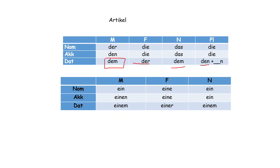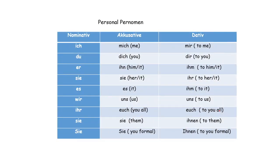'Den plus n' means we add 'n' to the noun that we use after 'den'. And 'ein' becomes 'einem' in masculine, 'einer' in feminine, and 'einem' in neuter.